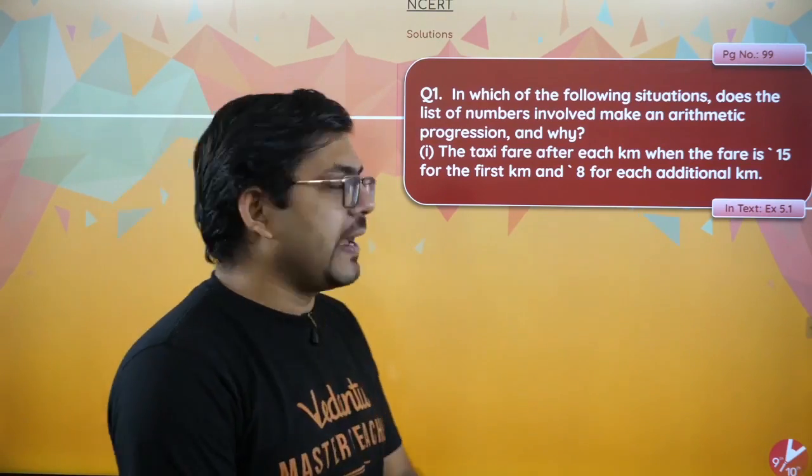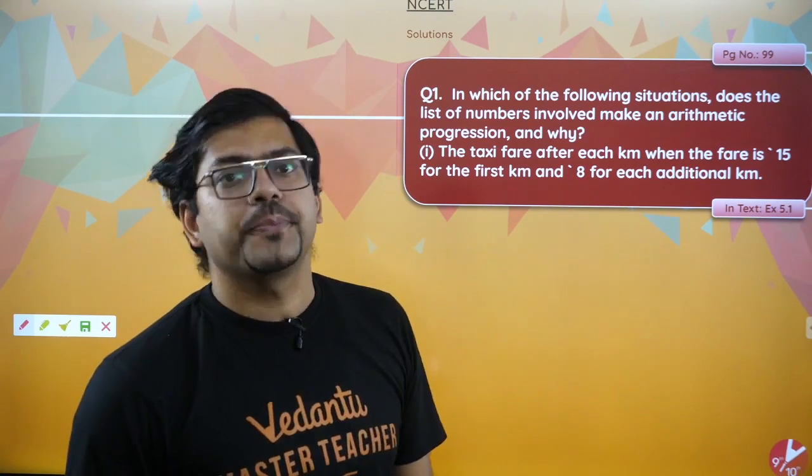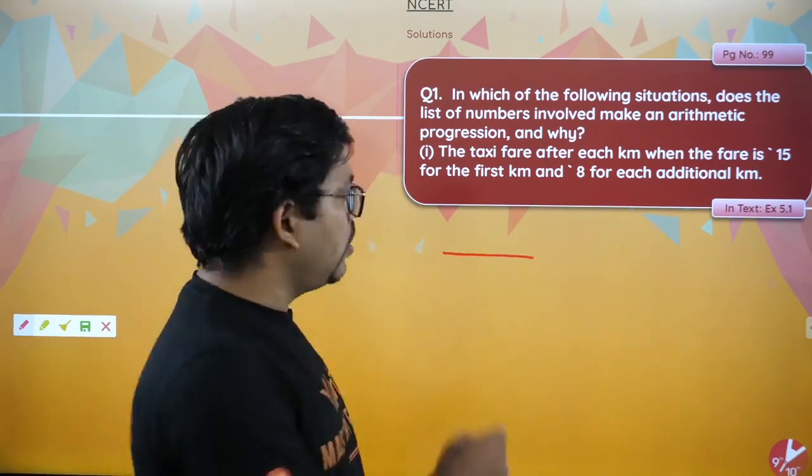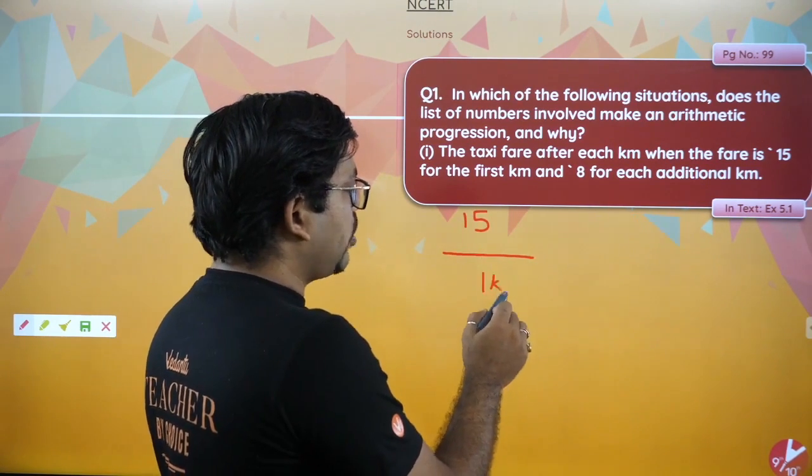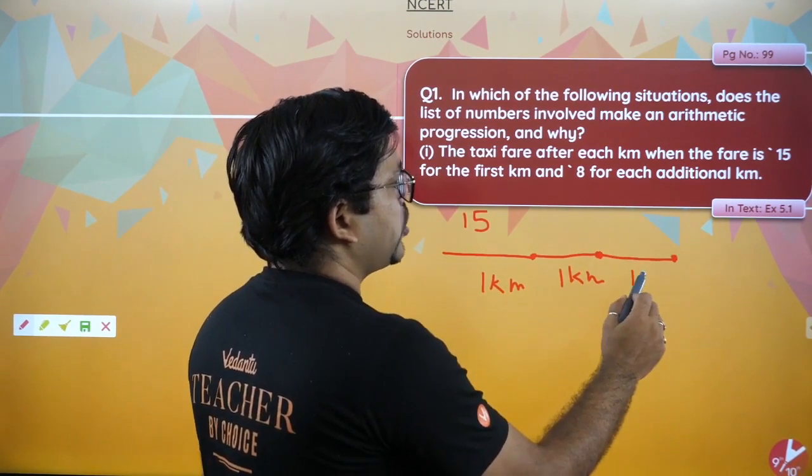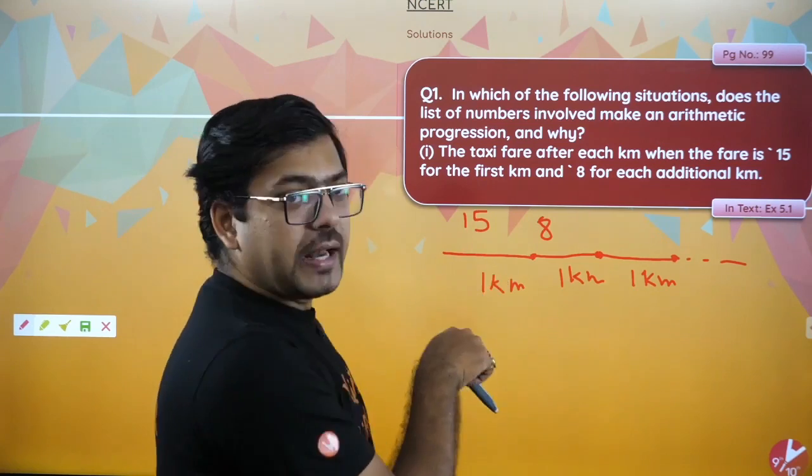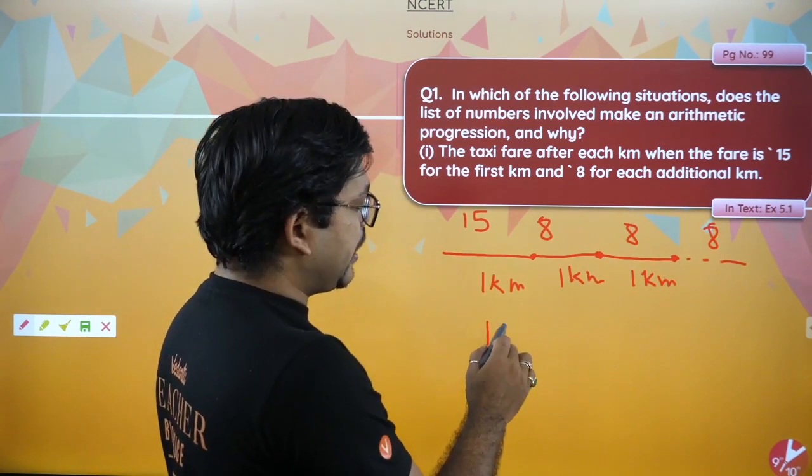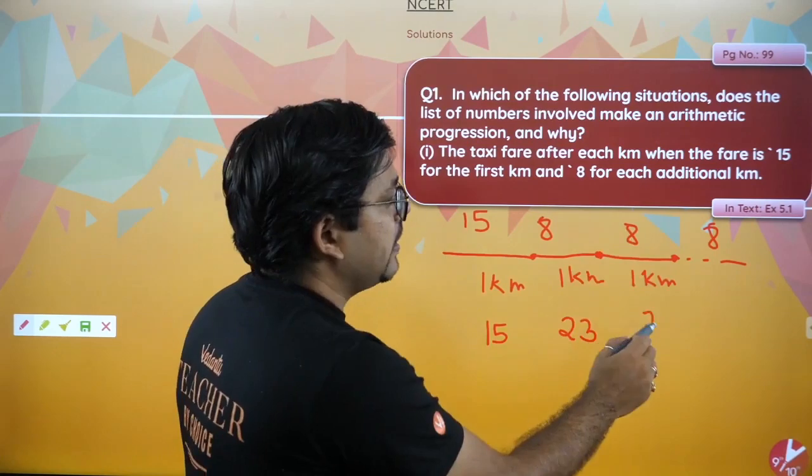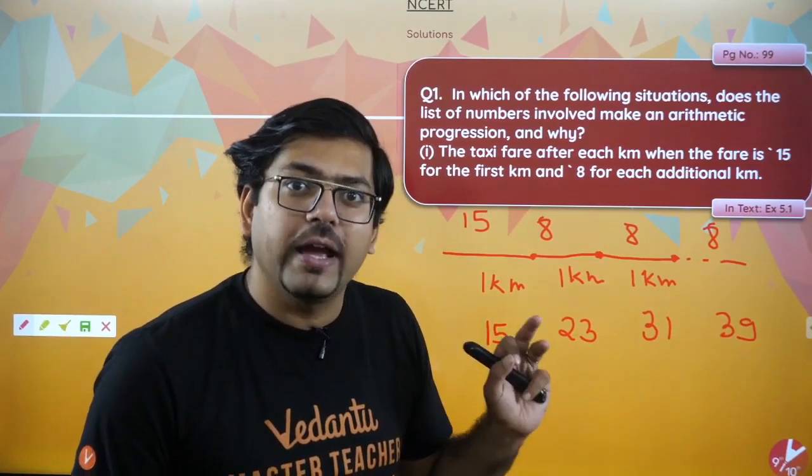Here is the first question. The first question says, in which of the following situation does the list of numbers involved make an arithmetic progression and why? The first situation is saying that there is a taxi fare after each kilometer when the fare is 15 for the first kilometer and 8 for each additional kilometer. When a taxi is running, the first kilometer you go to 15 rupees. And then after the first kilometer, as much as you go to extra kilometers, for each kilometer you will get additional eight rupees. So for example, 15 rupees, then 15 plus 8, then plus 8 and plus 8. The first kilometer is 15. The second kilometer is 15 plus 8, 23. Then on the third kilometer, 23 plus 8, 31. Then 39 and 47. The answer is yes.